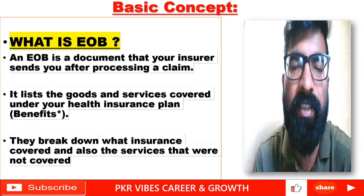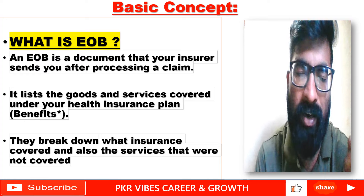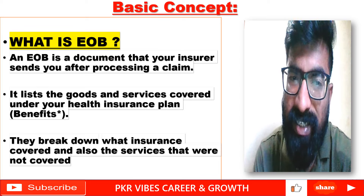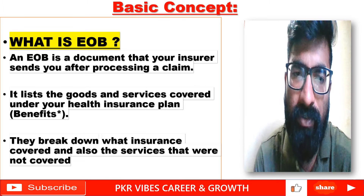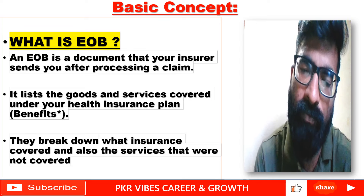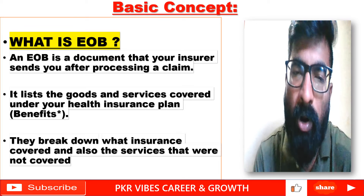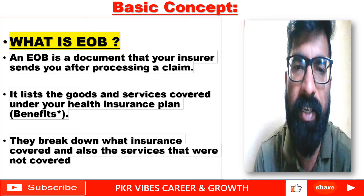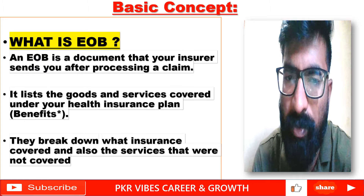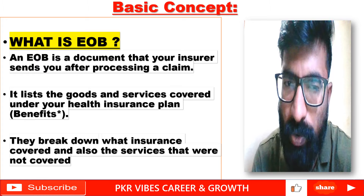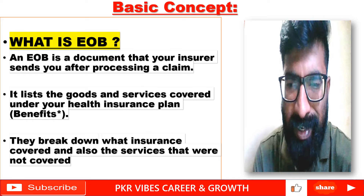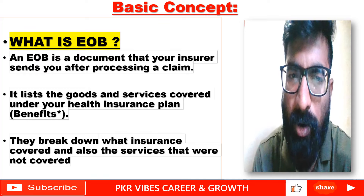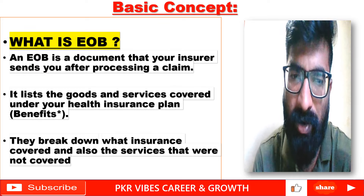After receiving the claim, the insurance will process it — generally we just call it a claim. After the doctor submits the medical claim form and the insurance processes it, that processed claim is known as an EOB — Explanation of Benefits — which is nothing but a document that your insurance sends you after processing a claim. This is also called an adjudicated claim or processed claim.